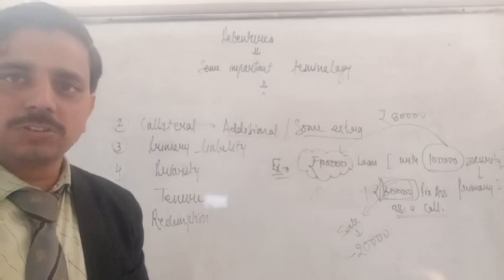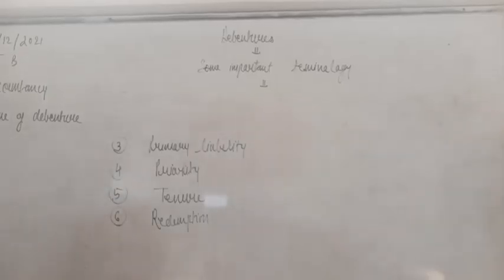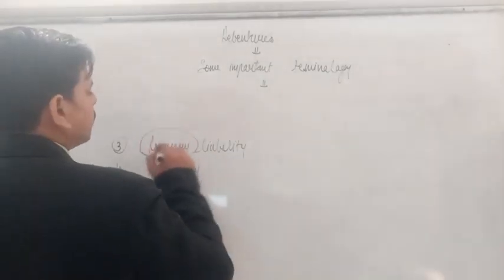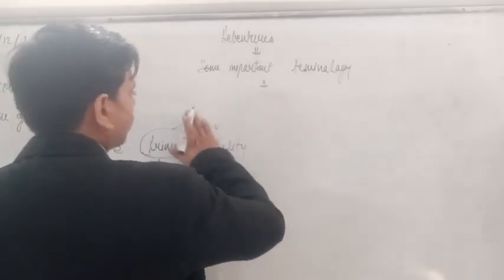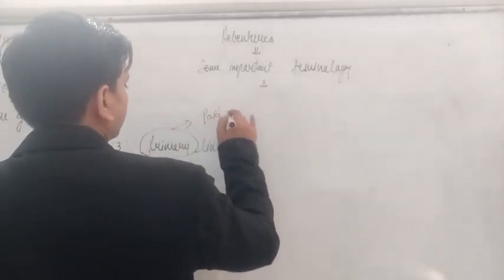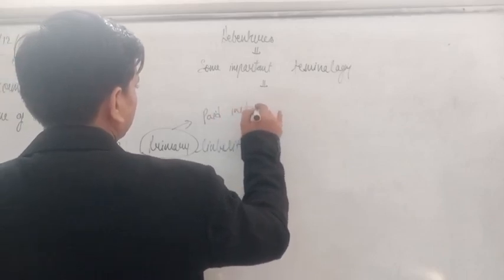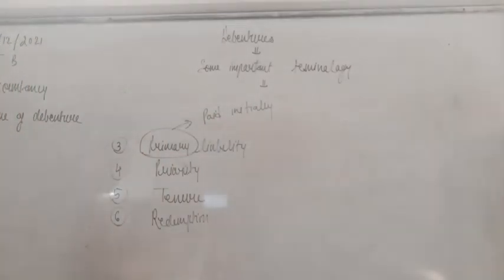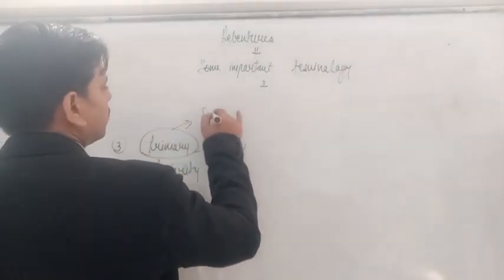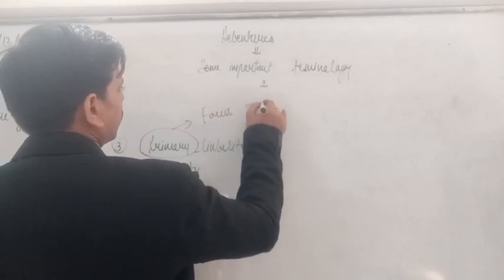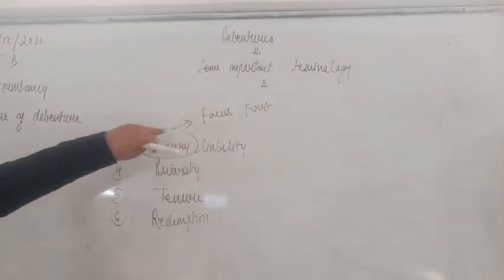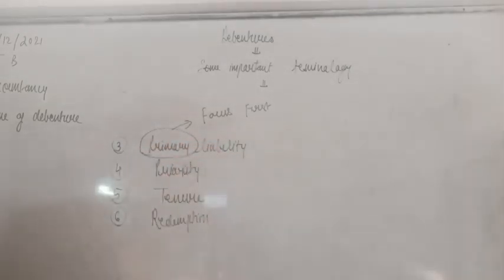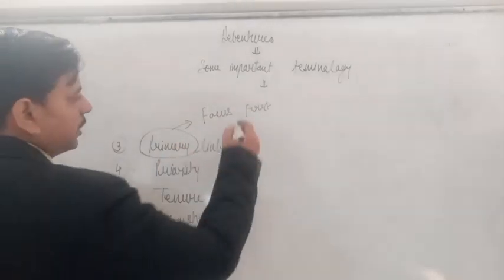इसके बाद हम बात करते हैं primary liability की। Primary liability means that which has been preferred first — you can say paid initially. जब हम किसी security या liability को preference पे देते हैं, उसको पहले focus करते हैं, उसे extra benefit देते हैं, तो उसे हम primary security या primary liability कहते हैं। जिस liability की payment में preference मिले उसे primary liability कहते हैं।